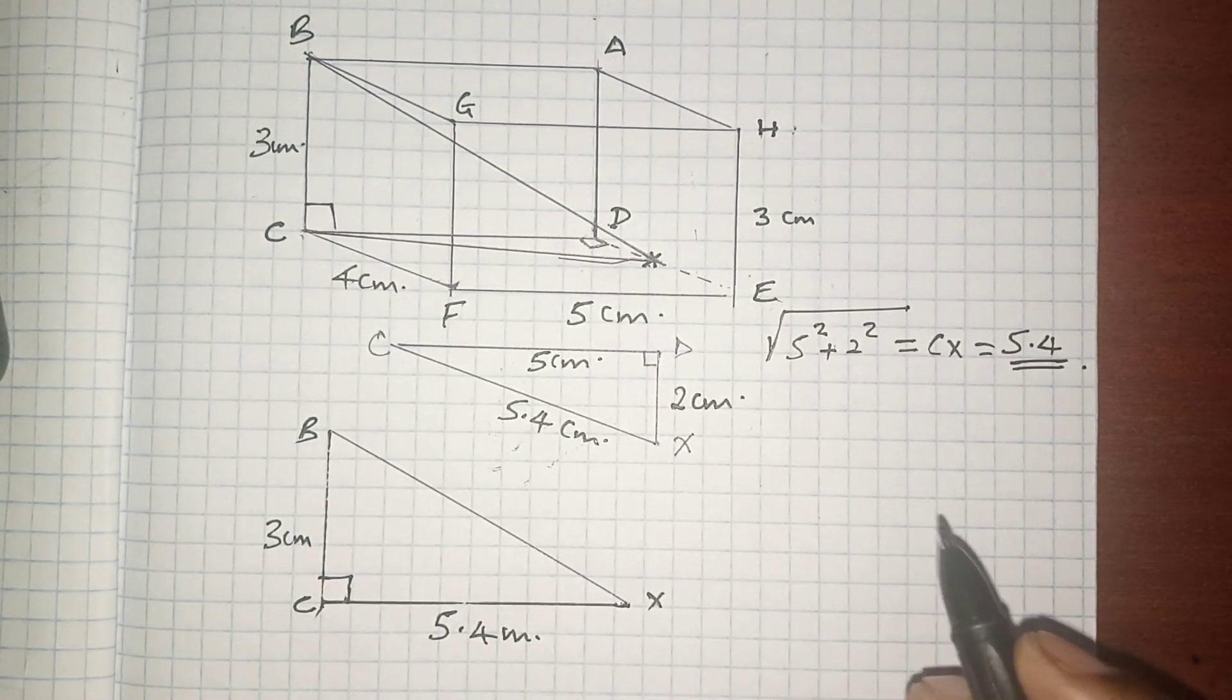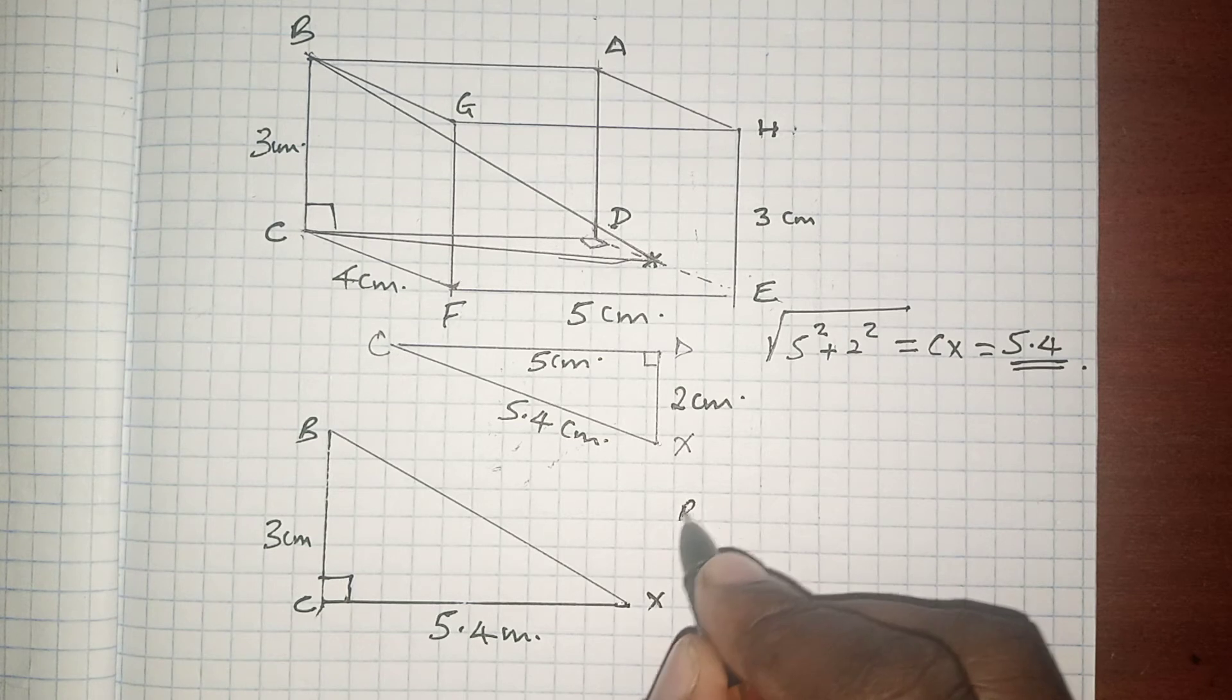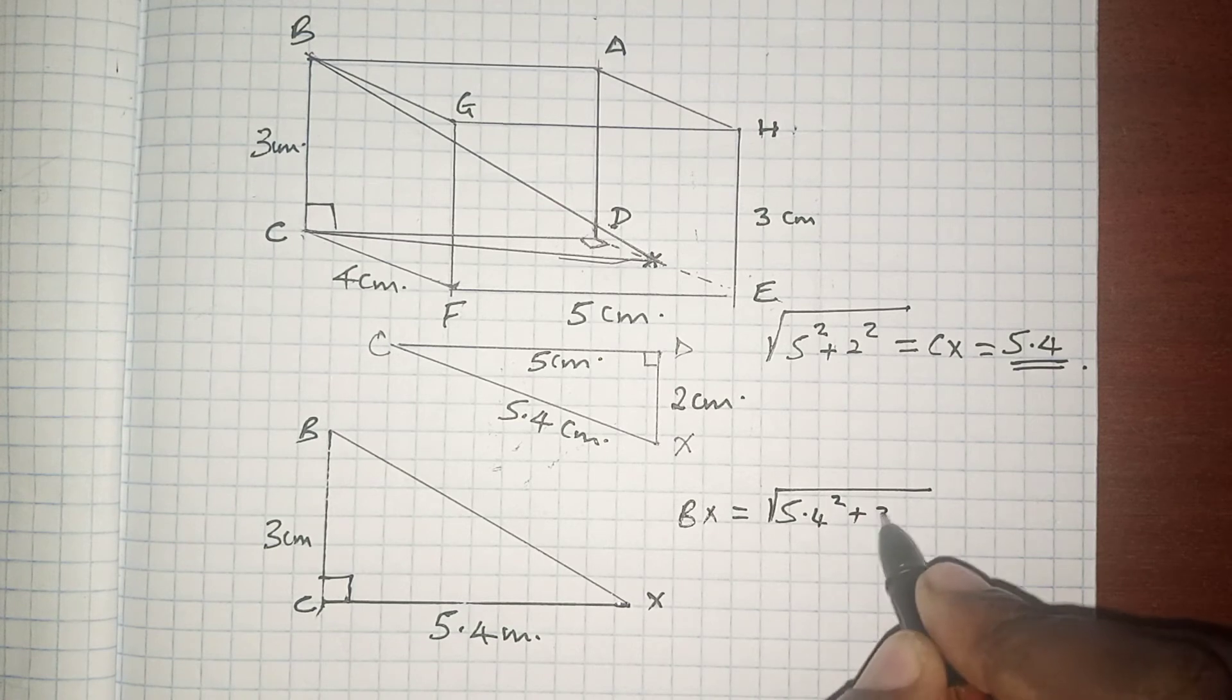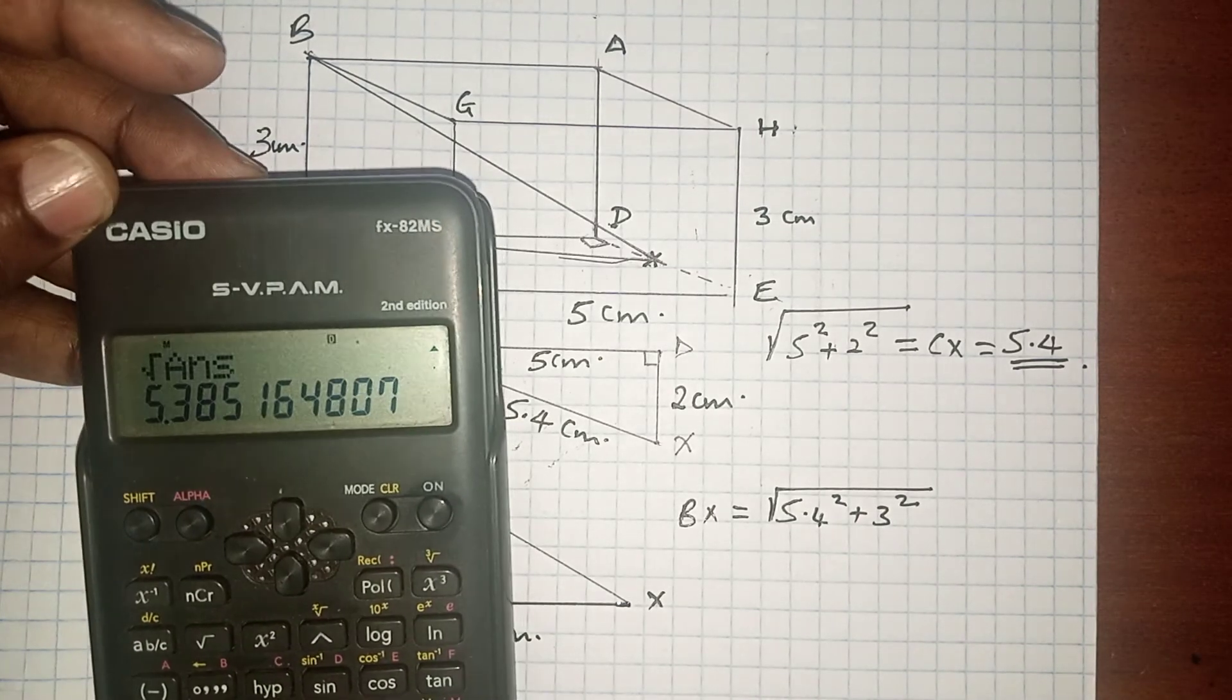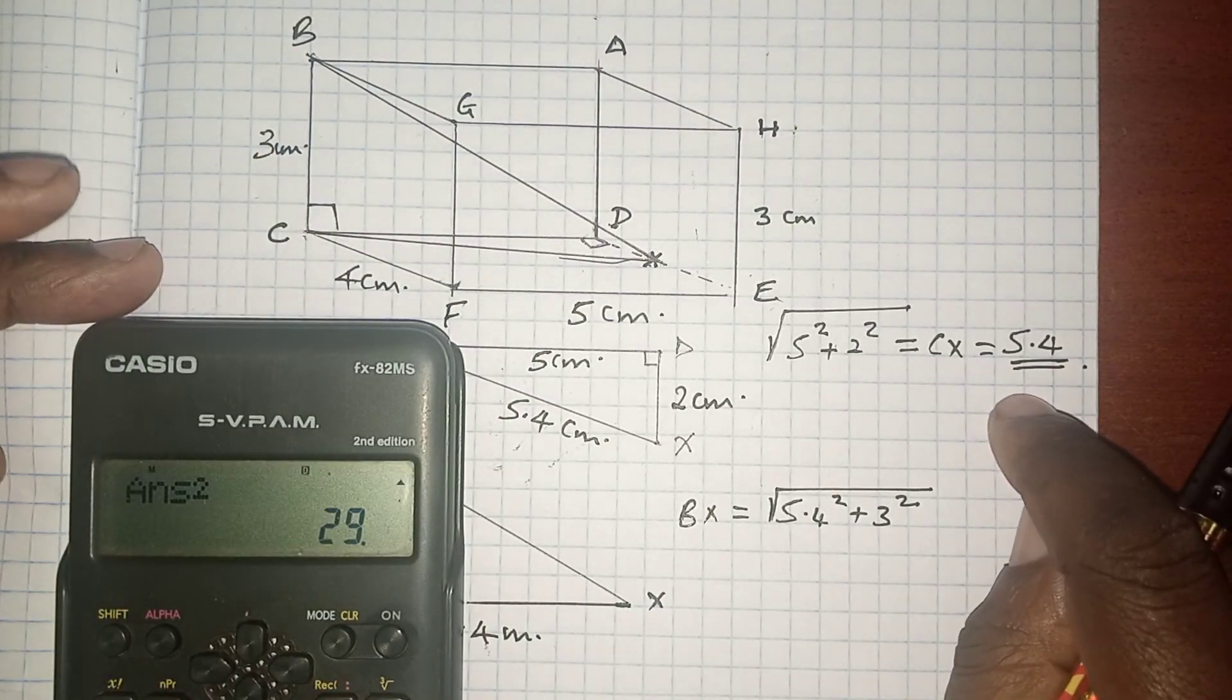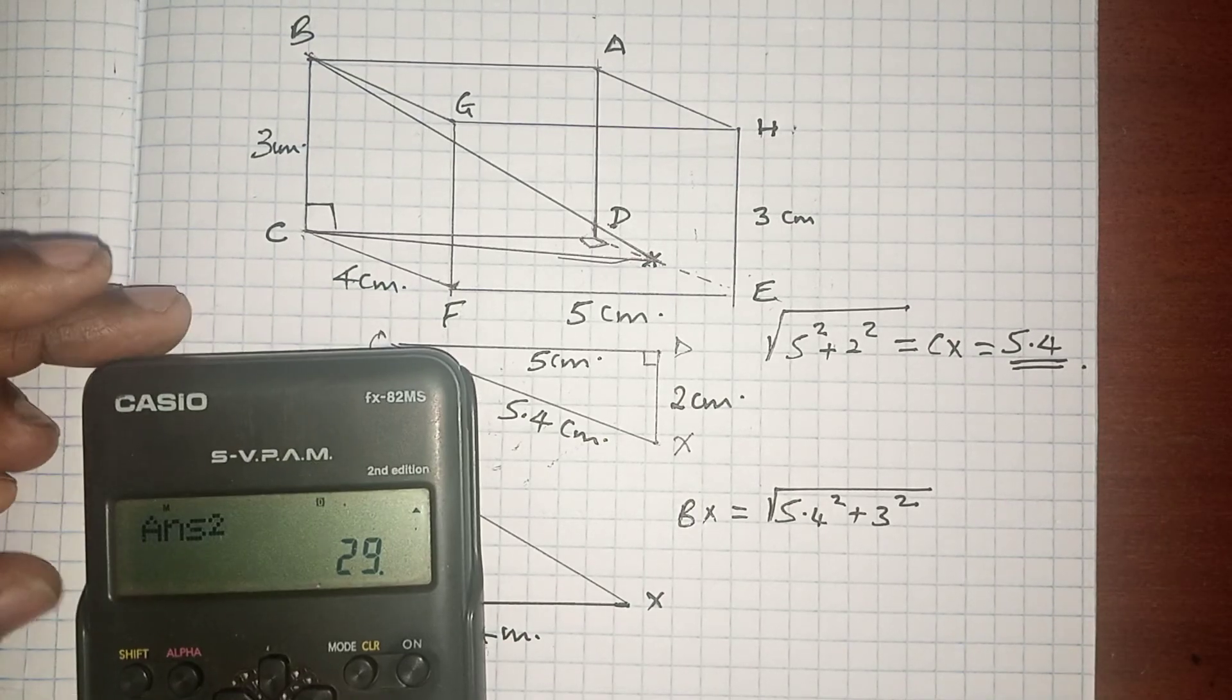BX is the square root of 5.4 squared plus 3 squared. Let's see. 5.4 squared accurately is 29 because the root of 29 is what we found to be 5.38 to 1 decimal place.